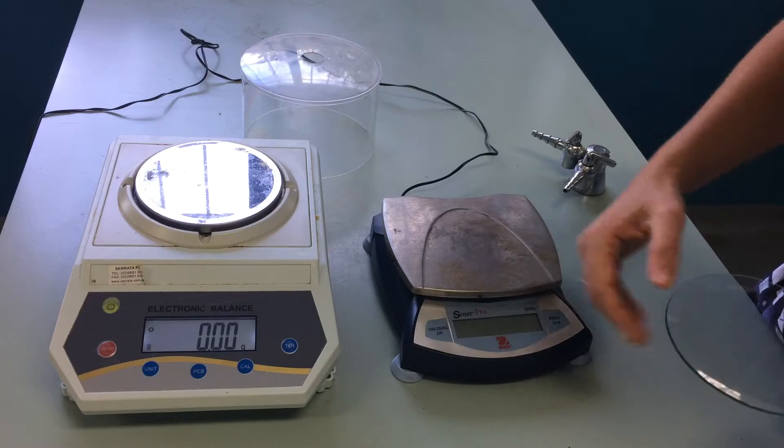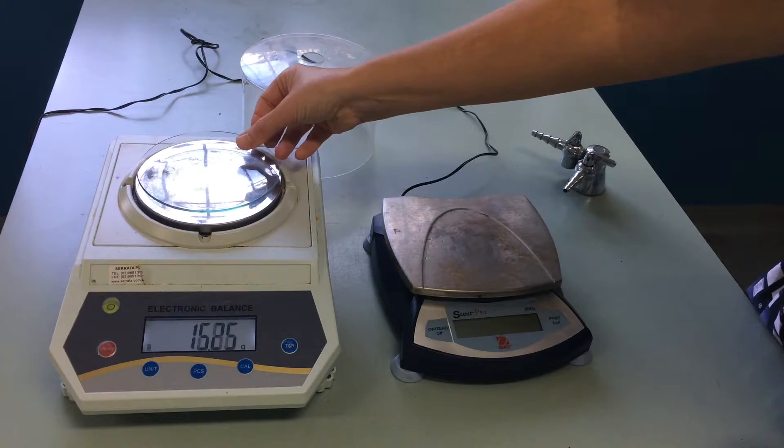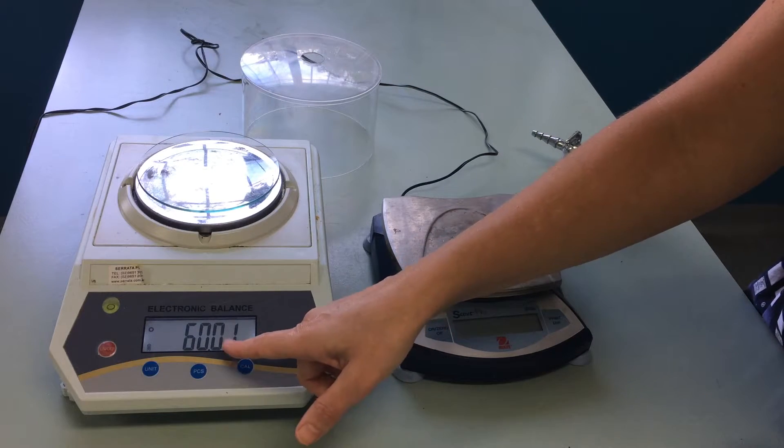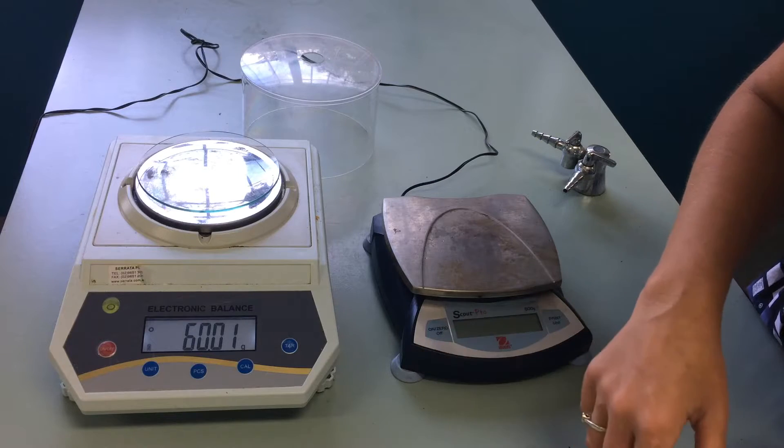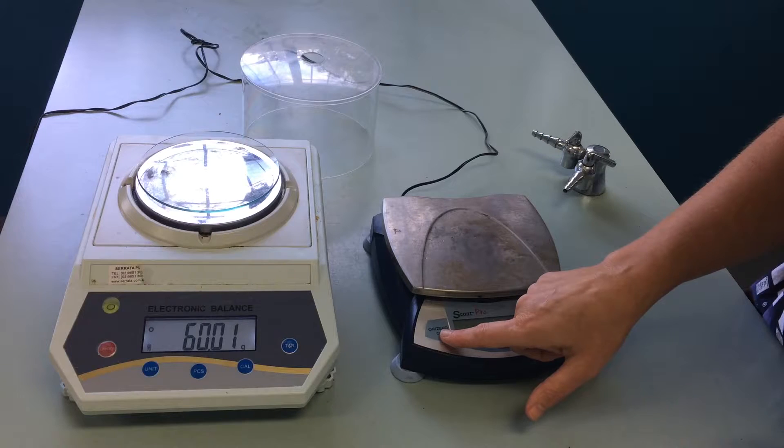It's best to always use a container that protects the balance pan's surface. Place your container on there. Now you'll notice it's reading the mass of the container. We need to cancel that out by pushing the tare button, sometimes called the zero button.